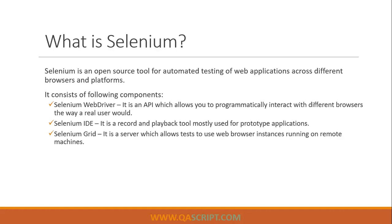The next component is also very important — this is called Selenium Grid. It helps us run our tests in parallel across different environments. It's basically a server which allows you to test web browser instances running on different remote machines. You install a Selenium standalone server on a particular machine, and then other machines act as nodes while one machine acts as a hub. When you trigger your tests on the hub, it executes all the tests on the different remote machines acting as nodes, which can have different browser combinations. This way you can test a number of platforms and browsers in parallel, saving time and increasing your test scope.